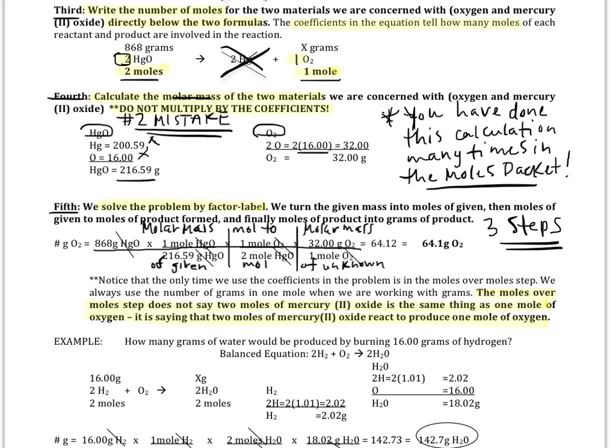Just like always, we start off our factor label by writing down what we've been given, that we have 868 grams of mercury oxide, and what we want to find. In this case, our unknown. We want to know the number of grams of oxygen.